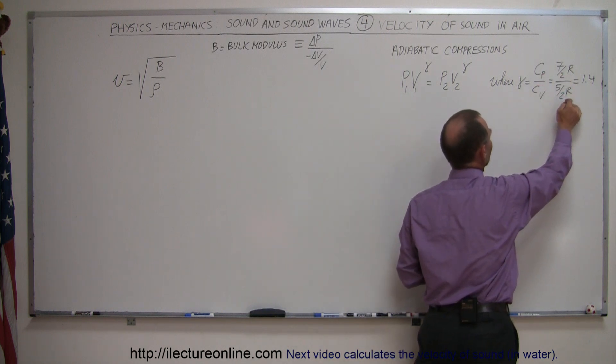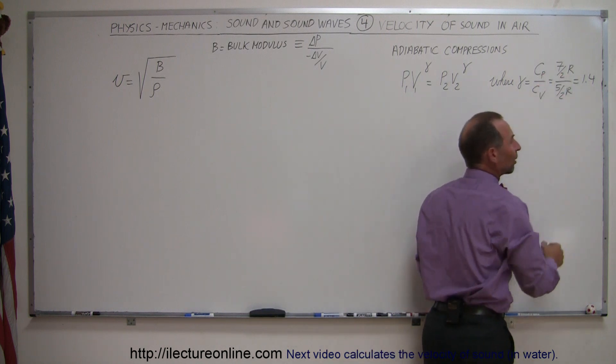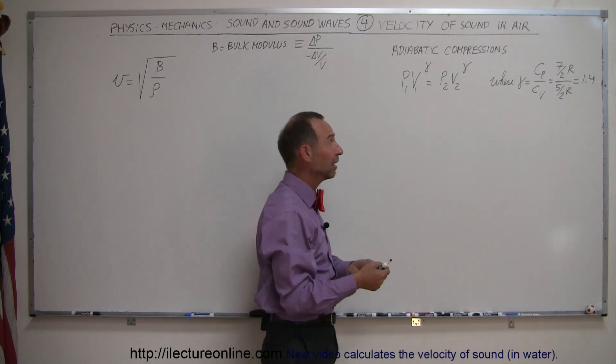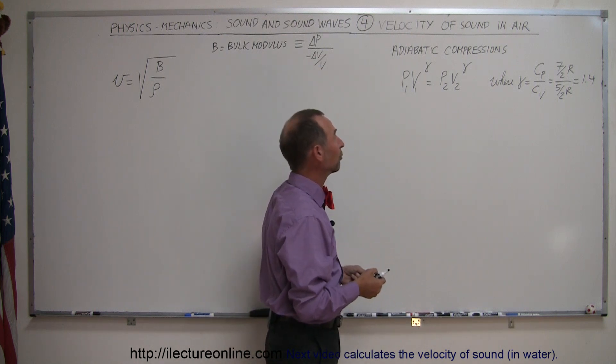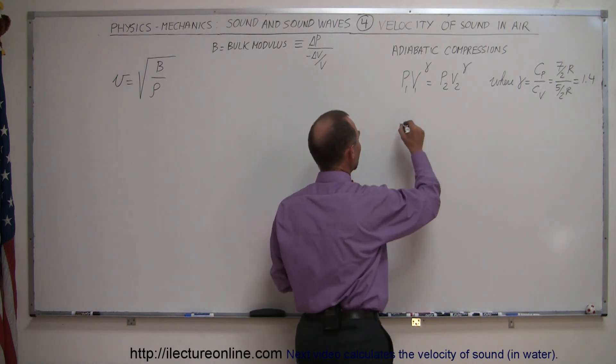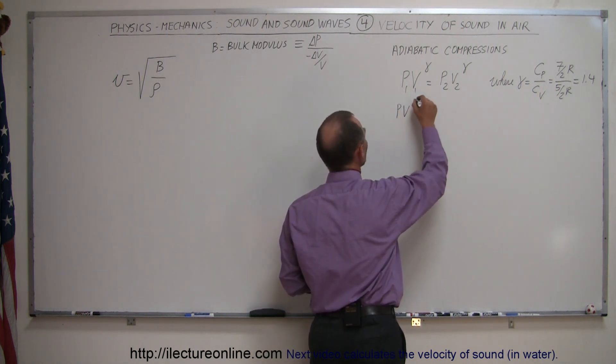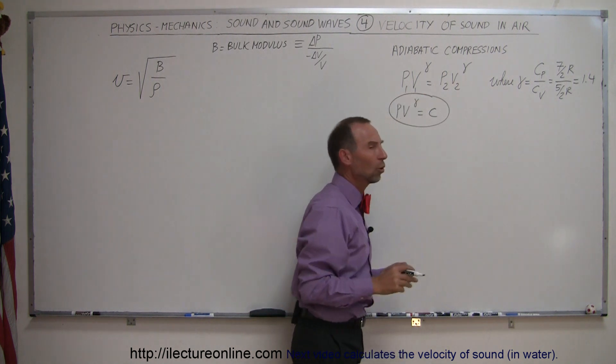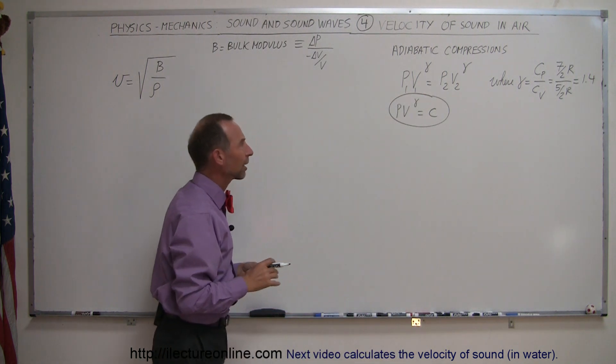is 7 halves R divided by 5 halves R, where R is the gas constant, which is 1.4. So we just need to know at this stage that gamma here is a constant, 1.4. What we can say then is that PV to the gamma is always a constant for a gas under adiabatic compressions.